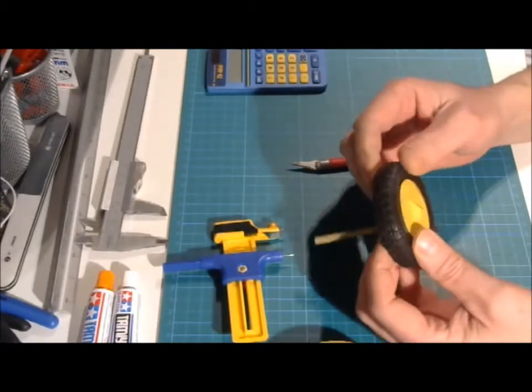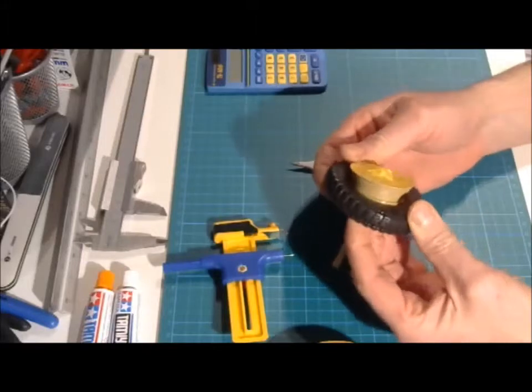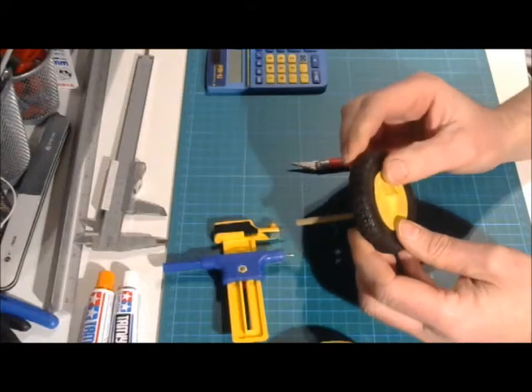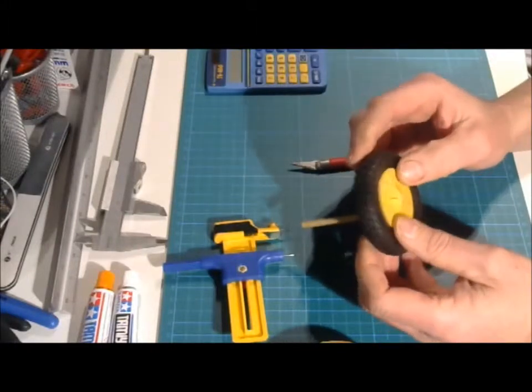Now on this wheel here, we didn't need to do that because we can remove the tire itself. But on small kits you cannot do that. But this is just to show how it's done.